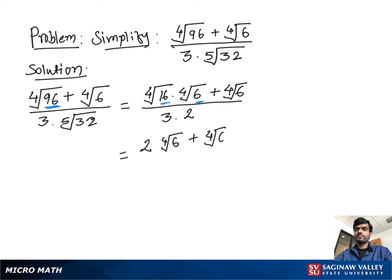We see 4th root of 6 in both terms, so we can take it as a common factor. We can write (2 plus 1) times 4th root of 6 divided by 6. So we have 3 times 4th root of 6 divided by 6.